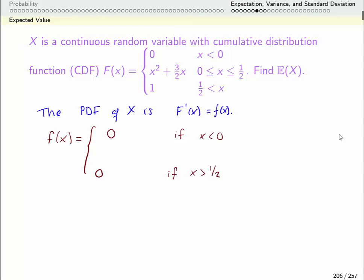This tells me all of the values of x that are taken by this event are between 0 and 1 half. I never get a value less than 0, and I never get a value bigger than 1 half. Between 0 and 1 half, the derivative of this function is just 2x plus 3 halves.